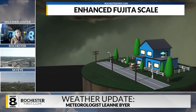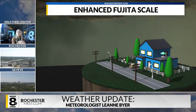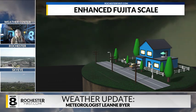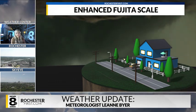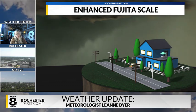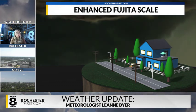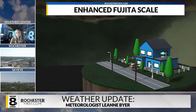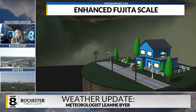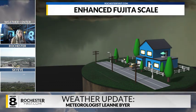Hello everyone. News 8 meteorologist Leanne Beyer here, and today we are here to talk about the enhanced Fujita scale, or the EF scale for short. This is the way that meteorologists categorize tornadoes — so when you hear EF0, EF1, or EF2, that is representing the enhanced Fujita scale.